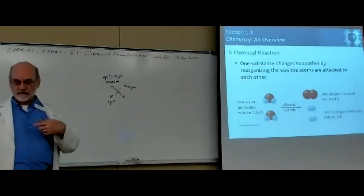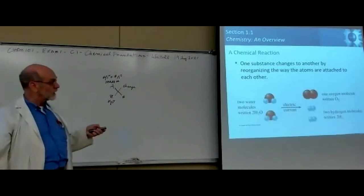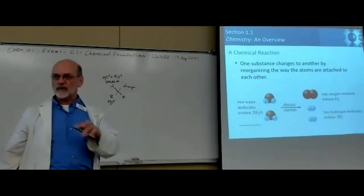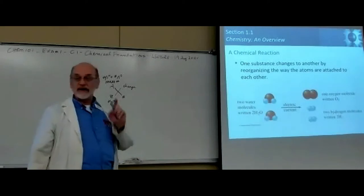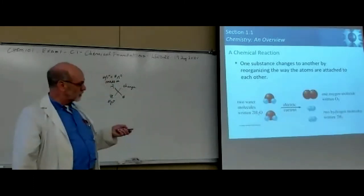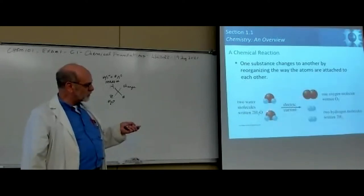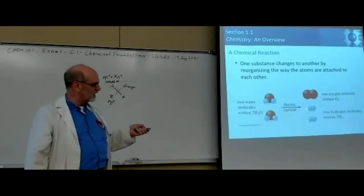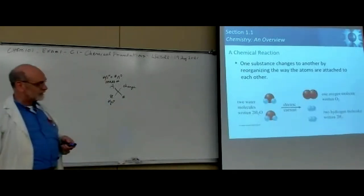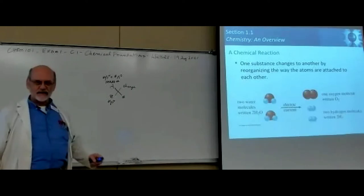So when we have a chemical reaction, there's a chemical change takes place. We produce a substance with a different identity. Actually we're going backwards here. Now we have water and we're going to split it apart. Before we were reacting oxygen and hydrogen to make the water, now we're going to go backwards. We just put some electrical energy in here and it breaks those bonds.